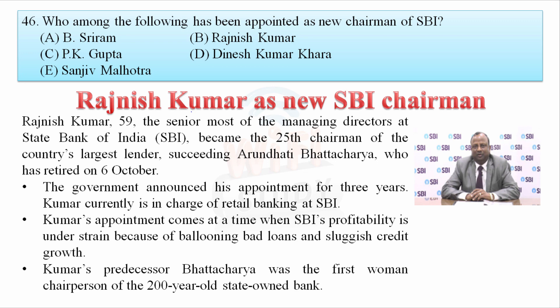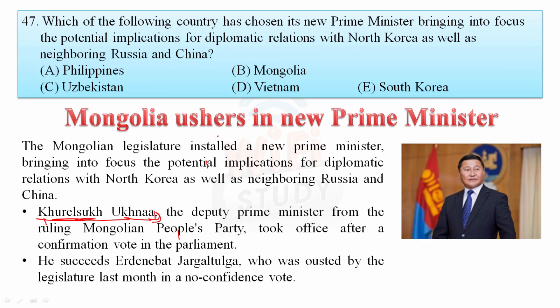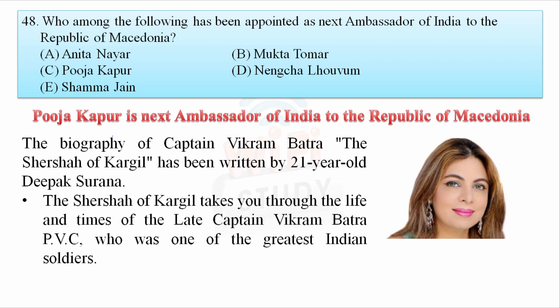Who is the new Chairman of SBI? Rajneesh Kumar has been appointed as the new SBI Chairman — the 25th Chairman of the country's largest lender — succeeding Arundhati Bhattacharya, who retired on 6th October. Also, Mongolia's legislature installed Khurelsukh as its new Prime Minister. And Pooja Kapoor has been appointed as the next Ambassador of India to the Republic of Macedonia.